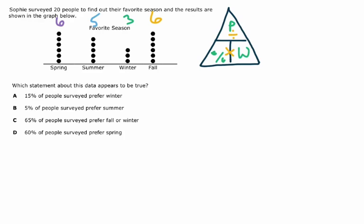Which statement about the data appears to be true? Fifteen percent of people surveyed prefer winter. We know the whole, they told us in the setup here, is twenty. Fifteen percent prefer winter, well winter is three, right there. So three over twenty, part divided by the whole, so I can just take three point zero, put it inside, divide it by twenty.